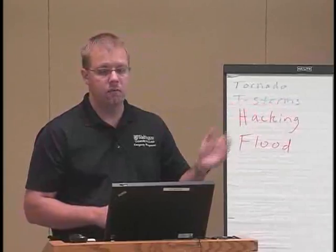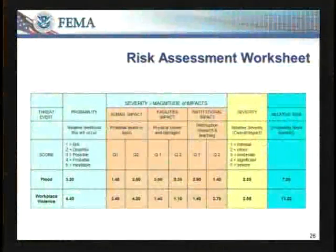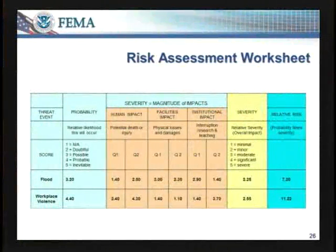This is what the risk assessment worksheet looks like — we'll go more in depth in just a moment. You identify what your hazards are and put them in the first column. You look at your probability. Then we look at severity on people, buildings, and reputation. That will give us our overall relative risk, and then we'll add in the preparedness level to give us our final risk.